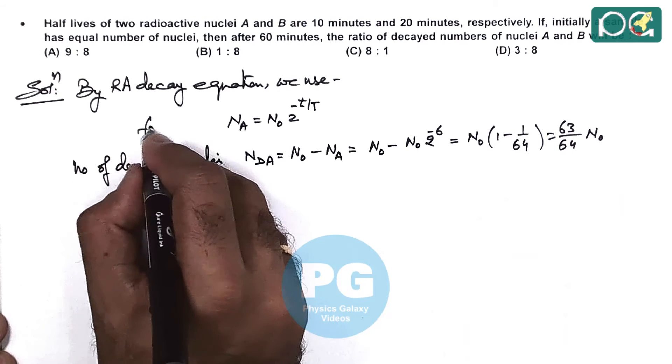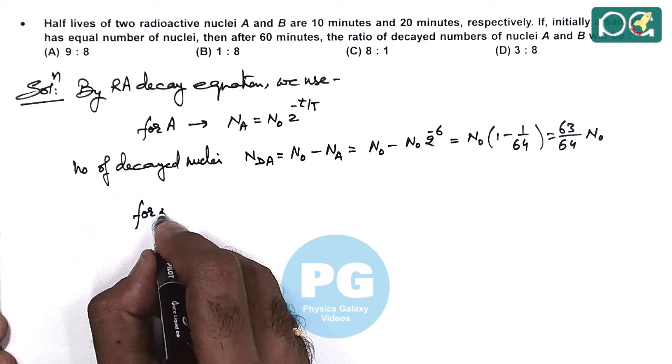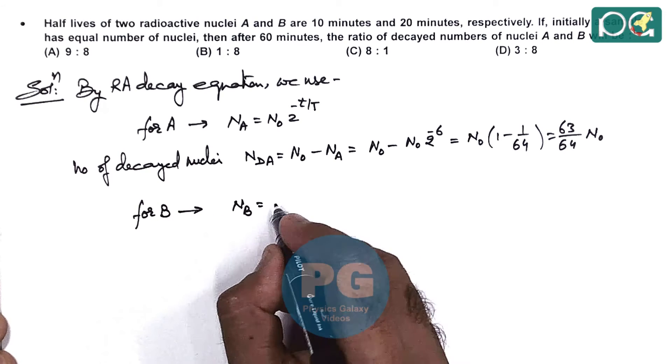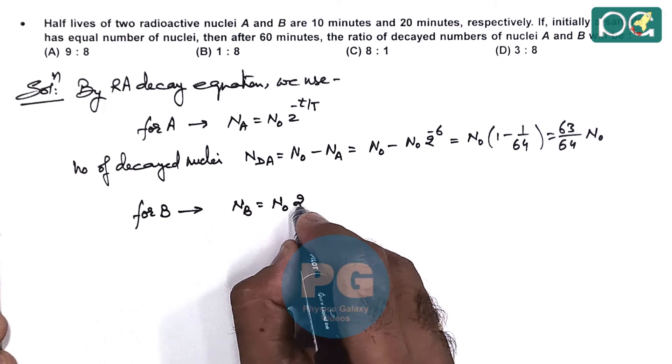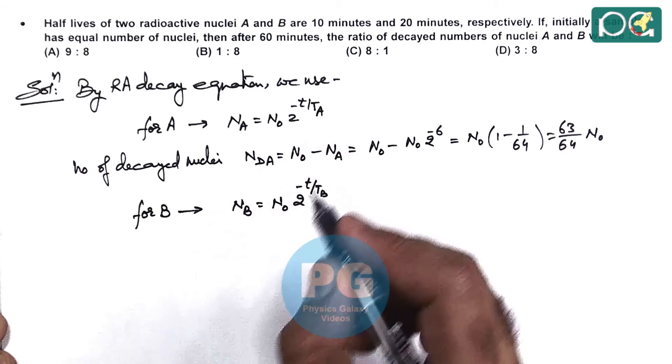This was for A. Similarly, if we analyze for B, then NB we can write as the initial number of nuclei, which is the same, N0 times 2 to the power minus T by Tb.